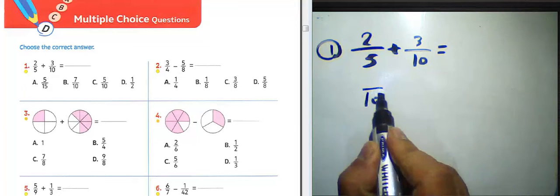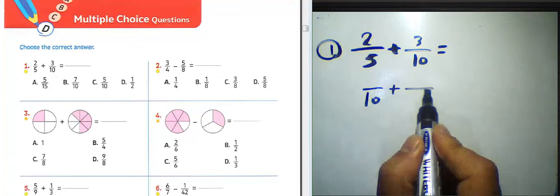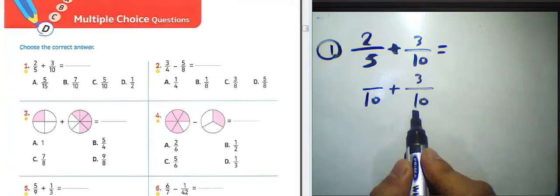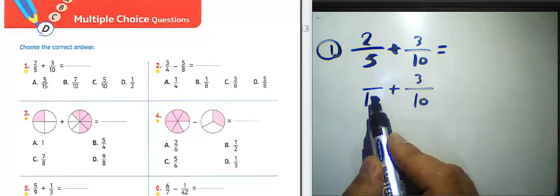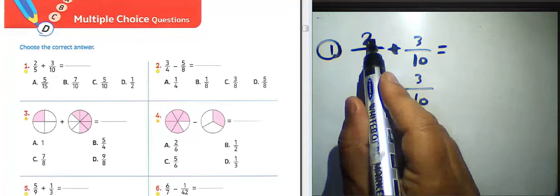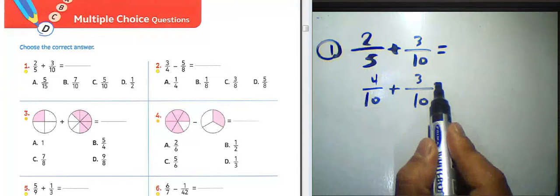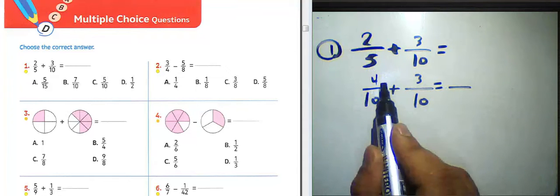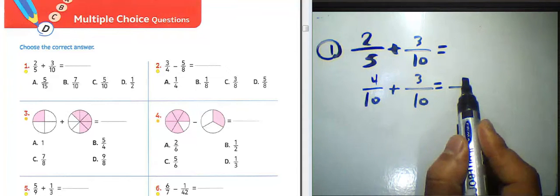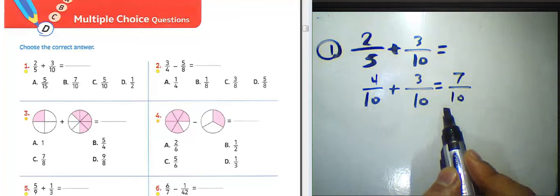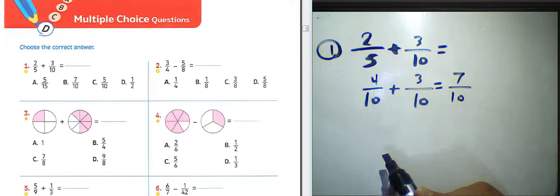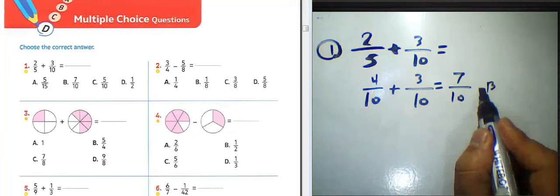Write it in the numerator as a fraction over 10. 5 multiplied by 2 equals 10, then 2 times 2 equals 4. So 4 plus 3 equals 7, over 10. The result will be 7 over 10. About question number one, we must choose letter B.